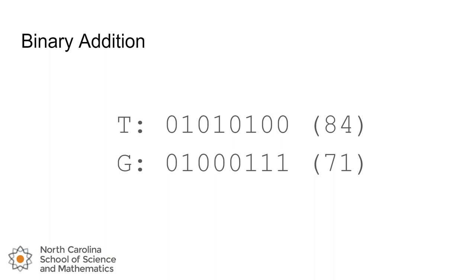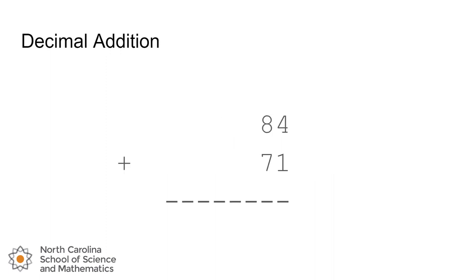And to do that, let's just refresh the algorithm we'd use for decimal representations. This is going way back to elementary school here, but we're adding two-digit numbers together. So we have this algorithm where you stack those decimal numbers vertically on top of each other.